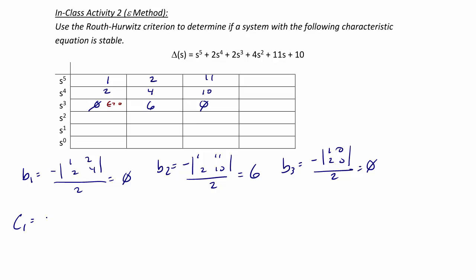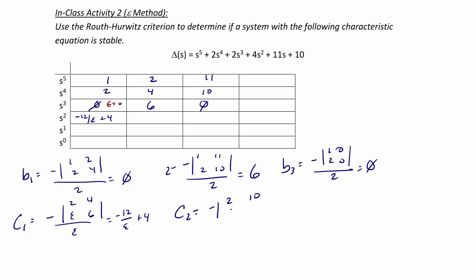c1 is going to be negative 2 times 6 minus epsilon times 4, divided by epsilon, and that's going to equal negative 12 over epsilon plus 4. c2 is equal to negative 2 times 0 minus epsilon times 10, divided by epsilon, so that equals 10.